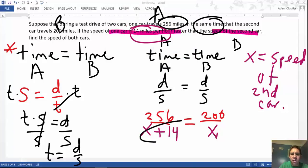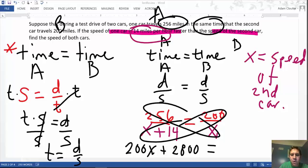First step, cross multiply. 200 times X plus 14 or 200 times the quantity of X plus 14 is 200X plus 2800 equals 256 times X.